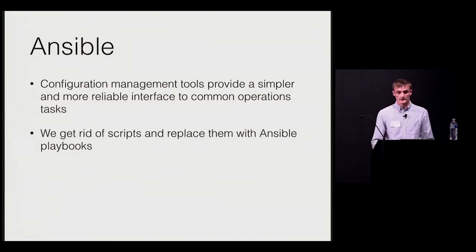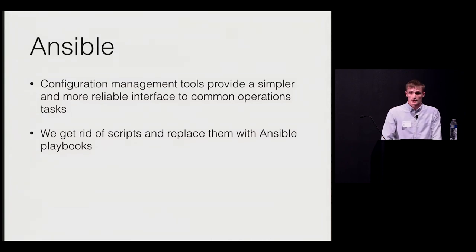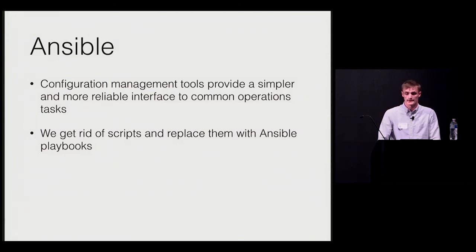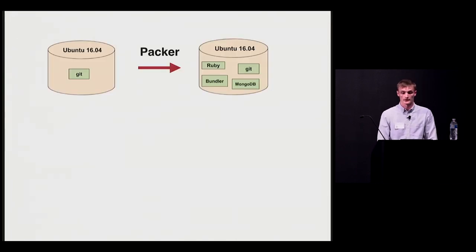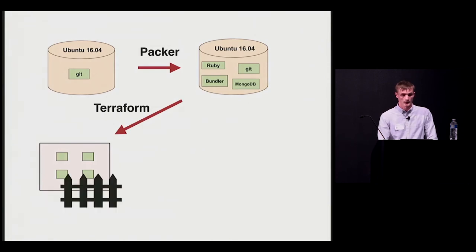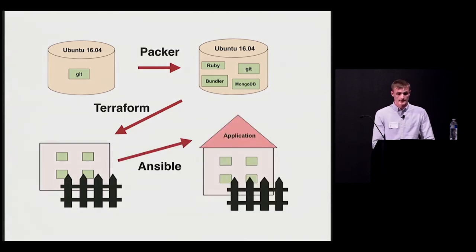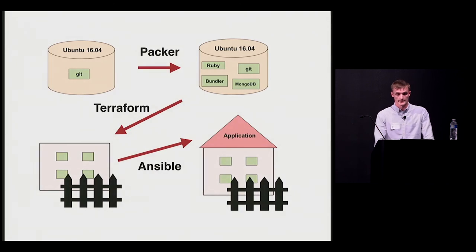Then we look at getting rid of bash scripts and replacing them with Ansible playbooks. I explain that configuration management tools like Ansible provide a simpler and more reliable interface for doing common operations tasks such as configuring the system and deploying the code. So by the end of this lab, we completely replace our manual process with infrastructure as code tools. We build a machine image with the required system configuration using Packer, launch a virtual machine and configure firewall rules with Terraform, and deploy our application with Ansible. As a result, we not only reduce the number of commands we have to run, but we also have a codified description of how infrastructure for our test application should look like.